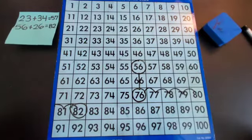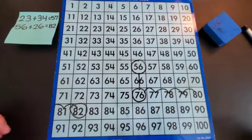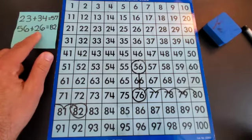Whenever you're faced with a two-digit addition problem, you can use a hundreds chart to first find the number, your first number, and then add your second number using your place value knowledge.